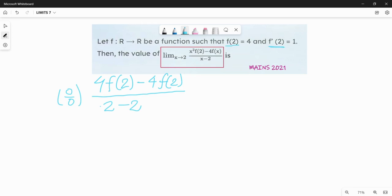So we will see limit x approaches to 2. x square derivative is 2x, f of 2 minus 4 into f prime of x. The derivative of x is 1 and the constant 2 becomes 0.